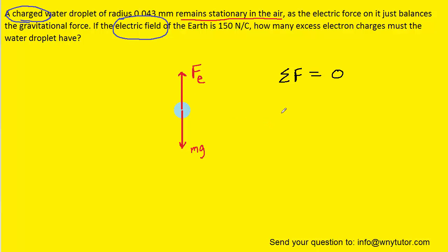Now, the upward force Fe is positive, whereas the gravitational force is downward and is therefore negative. So we have Fe minus mg equals zero. And we can go ahead and add mg over to the right-hand side, leading to this equation.